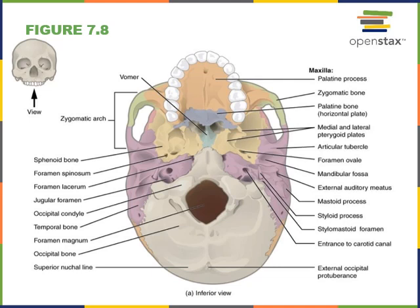In an inferior view we can see the foramen magnum, the major opening in the occipital bone containing the spinal cord. There is a small opening just lateral to the foramen magnum, adjacent to the occipital condyles — this is the hypoglossal canal, which contains the hypoglossal nerve. Glossus means tongue, and the hypoglossal nerve excites the muscles of the tongue; the hypoglossal canal is where this nerve travels out of the cranium.